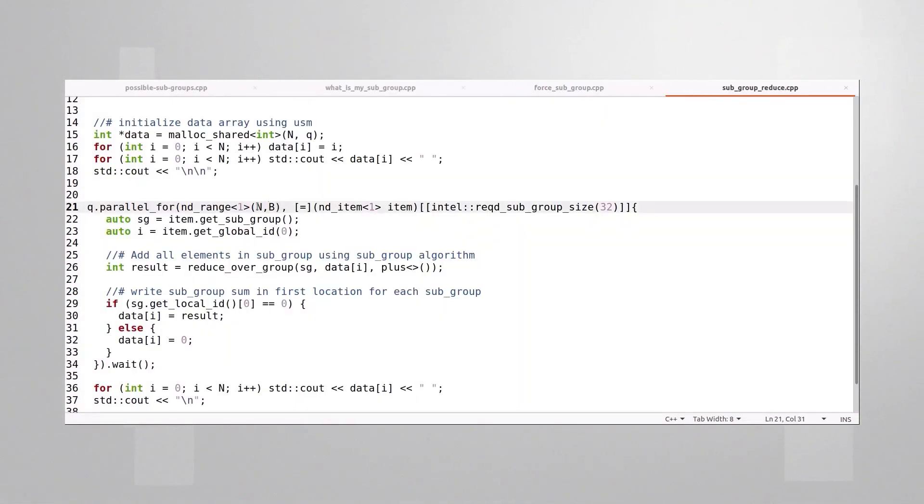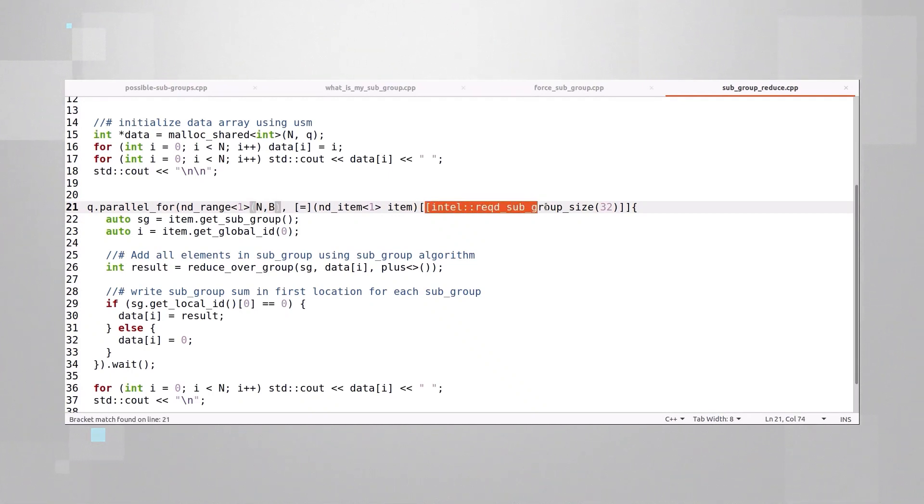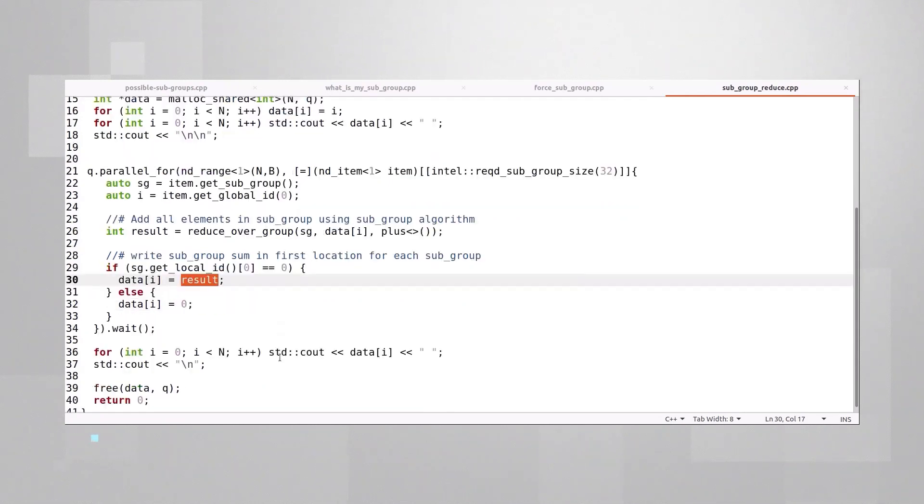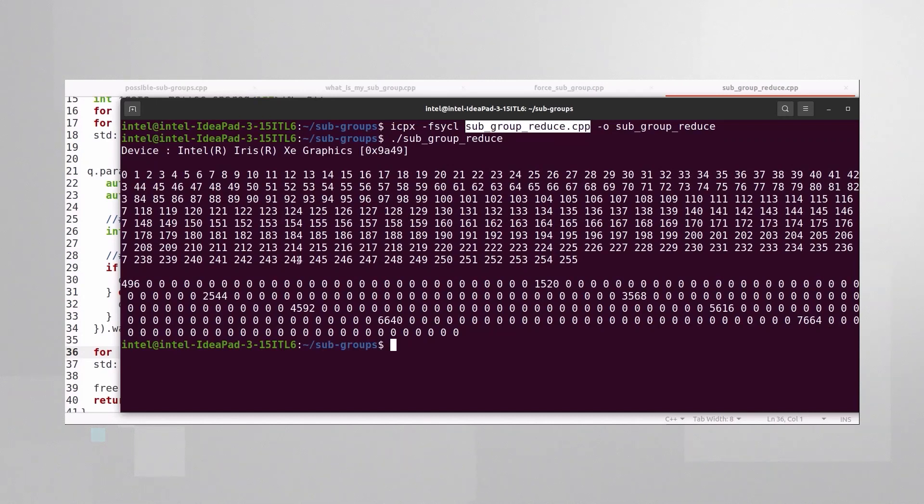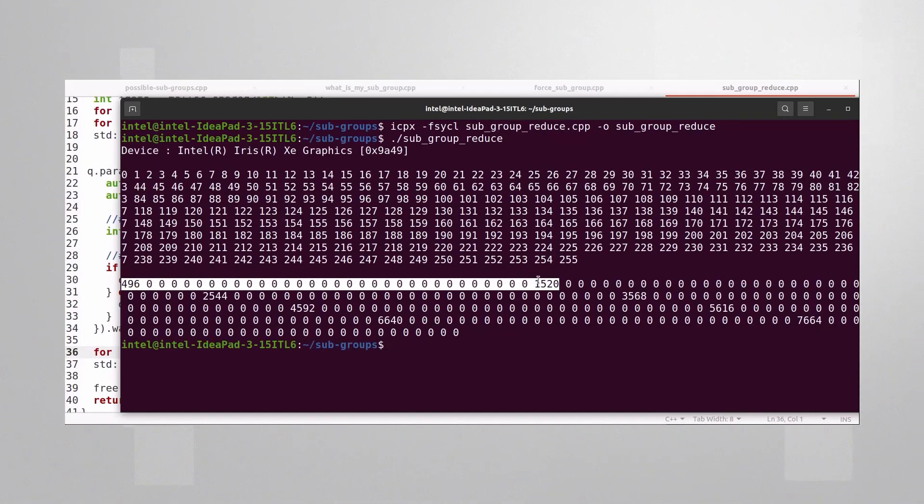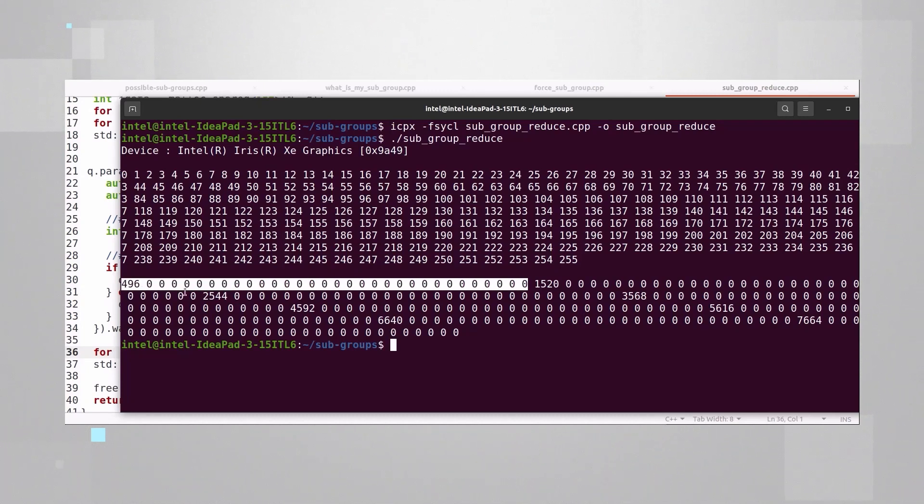And let's use it. I'm iterating n times with workgroup size of B and I'm forcing the subgroup to be 32. And for each subgroup I'm using reduce over group, basically accumulating all the data handled by the subgroup into result. And I will store the result in the first element and print it out. Compile and run and you can see that any 32 elements of the data were reduced, summarized into the first element. And it's all been done inside the EU.